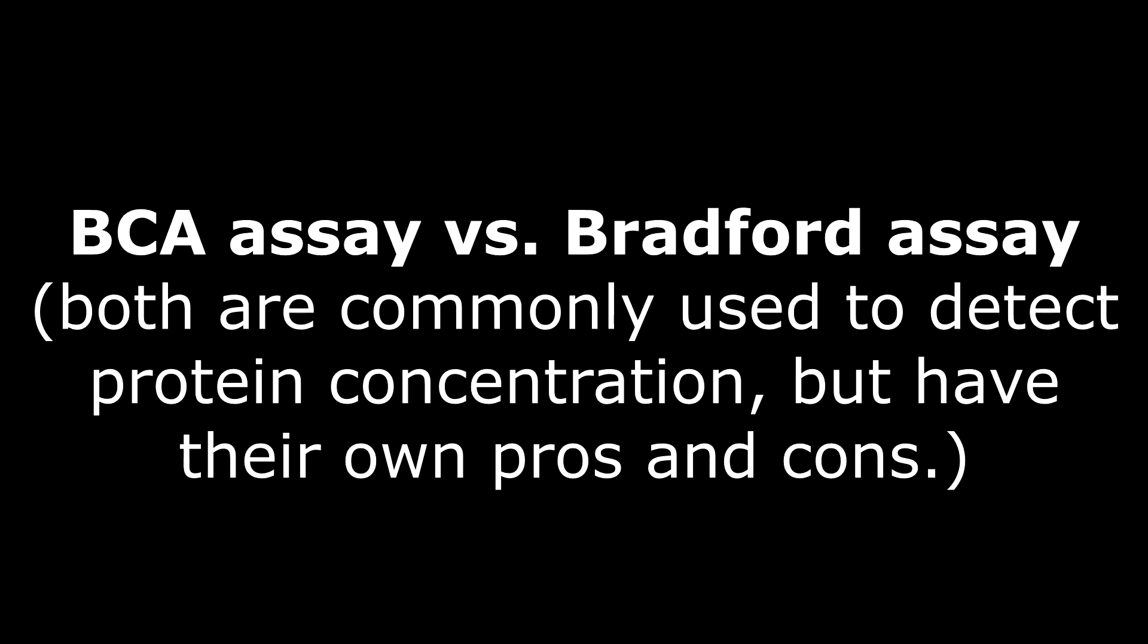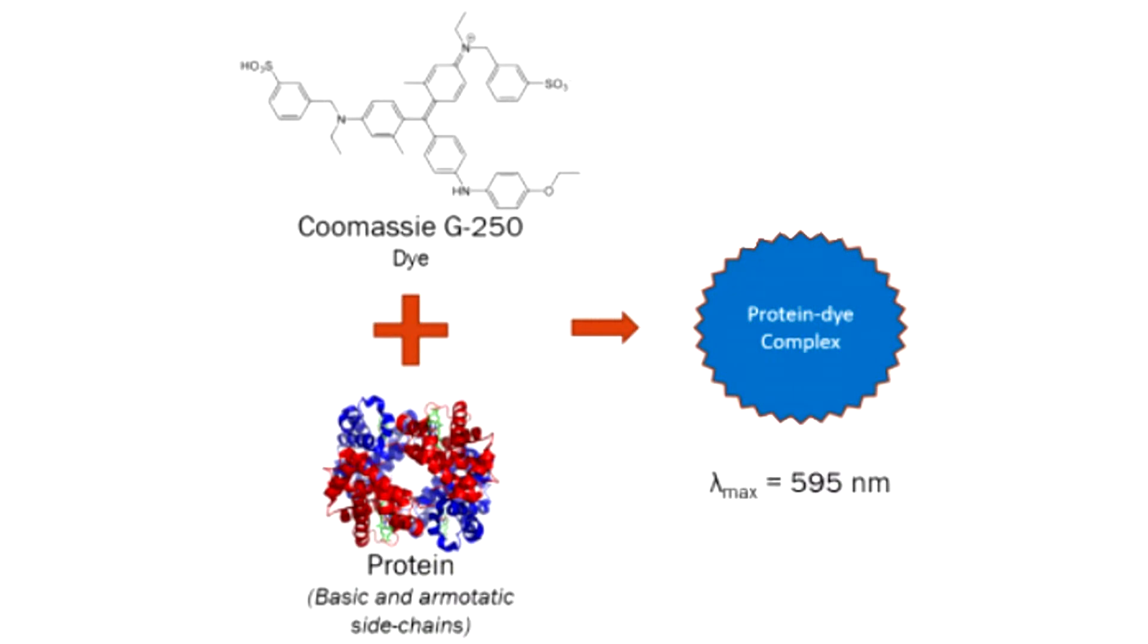Another type of protein assay you may be familiar with, or that you may have done in a previous lab at UTEP, is called the Bradford protein assay. The Bradford assay is based on the ability of Coomassie blue to bind directly with protein molecules in the sample, causing the dye to change color from a brownish-red to a blue color, which has an absorbance of 595 nanometers.